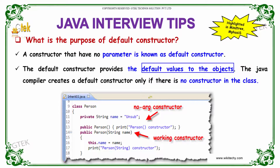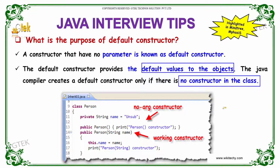The Java compiler creates a default constructor only if there is no constructor in the class.